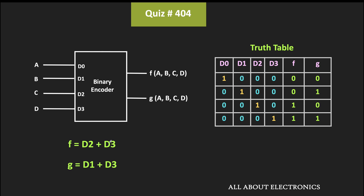Here, d2 input is equal to c, while d3 input is equal to d. That means we can say that output f is equal to c plus d. Likewise, d1 input is equal to b, which means the g output is equal to b plus d.